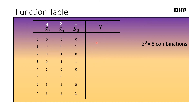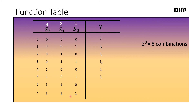Now we have to write the output for this. The output of 0,0,0 is I0. The output of 0,0,1 is I1. The output of 0,1,0 is I2. The output of 0,1,1 is I3. The output of 1,0,0 is I4, then I5, I6, and I7. These are the outputs.